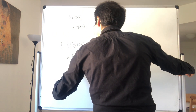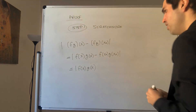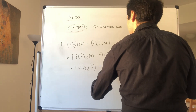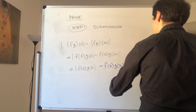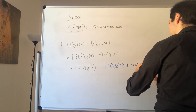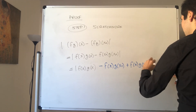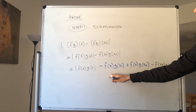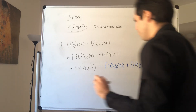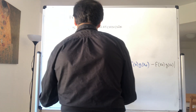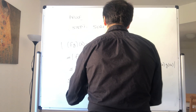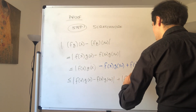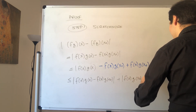Now remember this really beautiful trick, which is similar to the product rule. We add and subtract f(x)g(x₀): so this becomes f(x)g(x) - f(x)g(x₀) + f(x)g(x₀) - f(x₀)g(x₀). The nice thing is this is less than or equal to |f(x)g(x) - f(x)g(x₀)| + |f(x)g(x₀) - f(x₀)g(x₀)| by the triangle inequality.